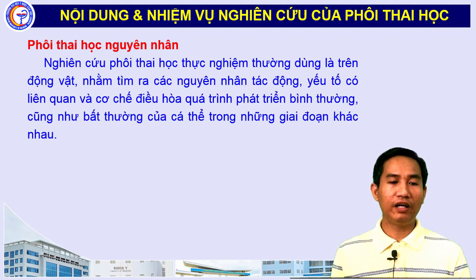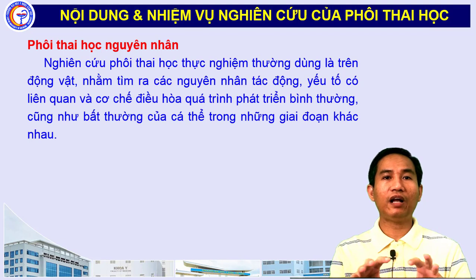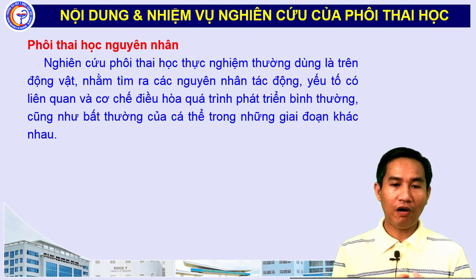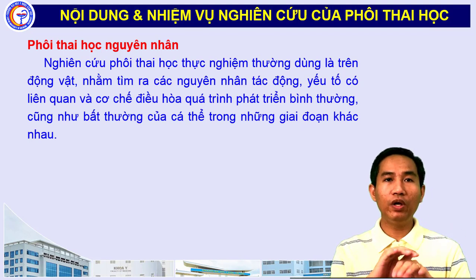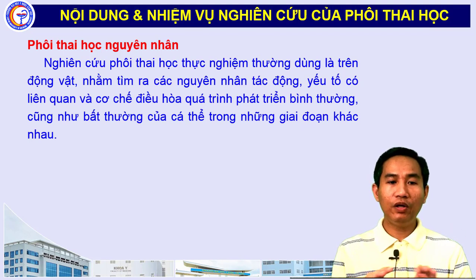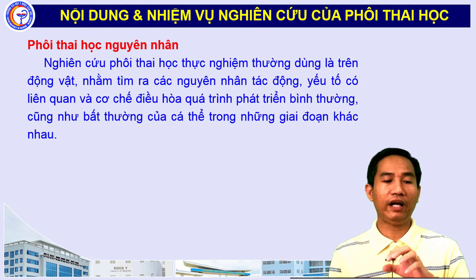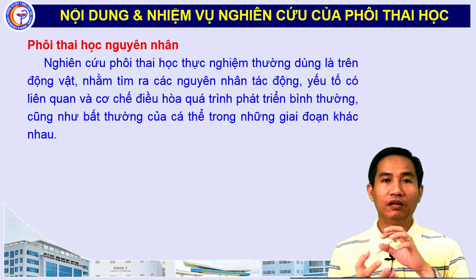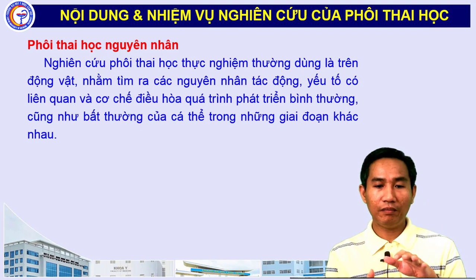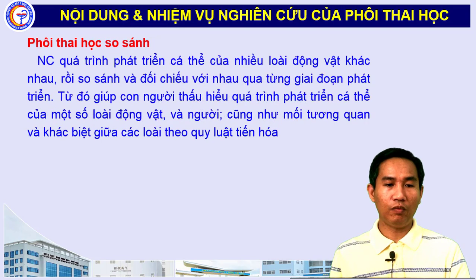Phôi thai học nguyên nhân là lĩnh vực nghiên cứu thường thực nghiệm trên các loại động vật như chó, thỏ, chuột, v.v. để tìm ra các nguyên nhân tác động, các yếu tố ảnh hưởng, các cơ chế điều hòa các quá trình phát triển của mô và cơ quan, cũng như cơ chế nguyên nhân xảy ra các bất thường trong các giai đoạn phát triển khác nhau.